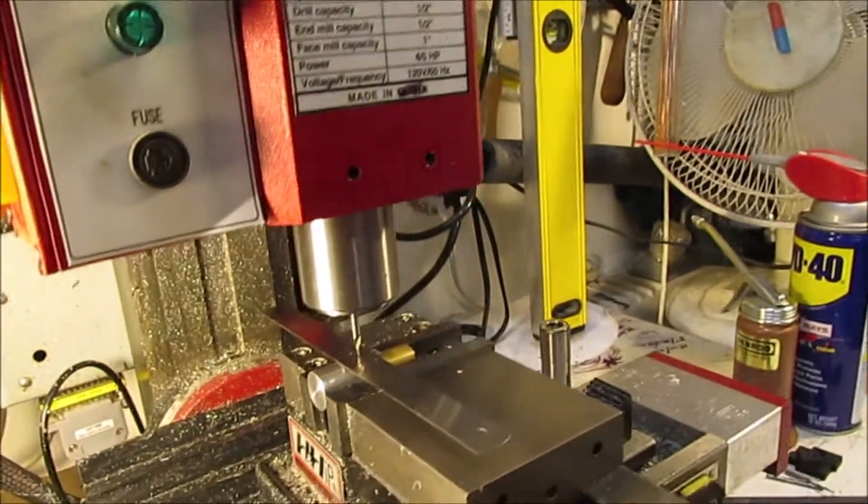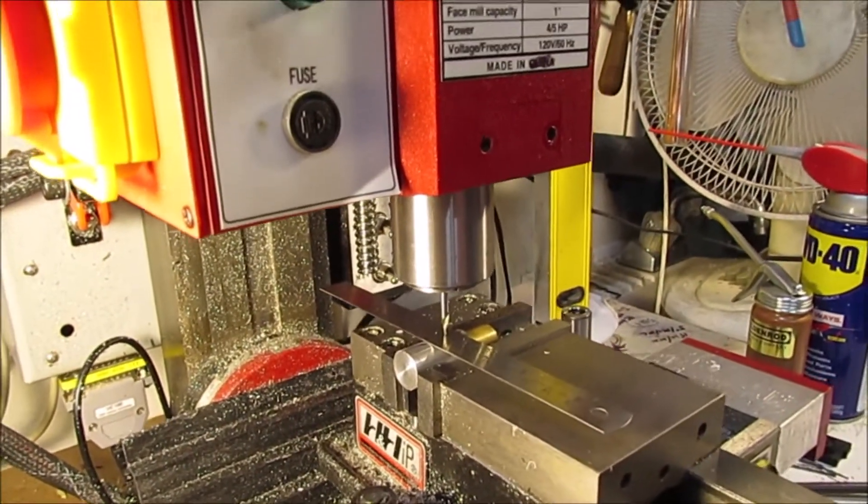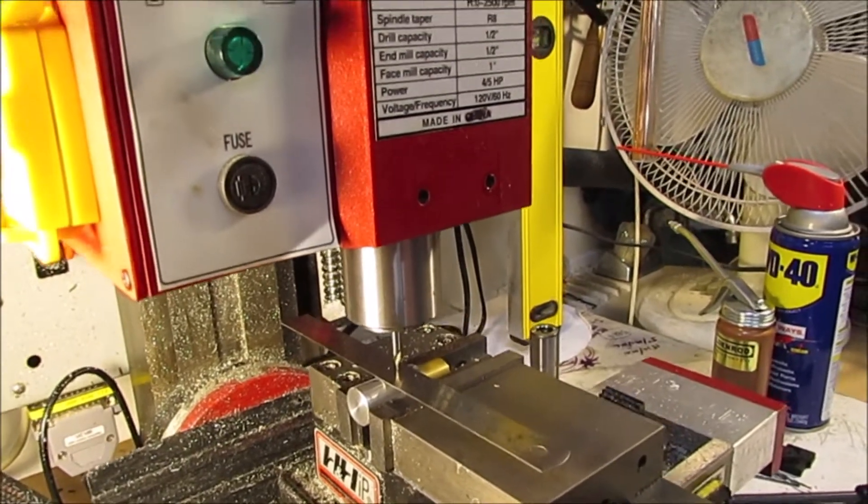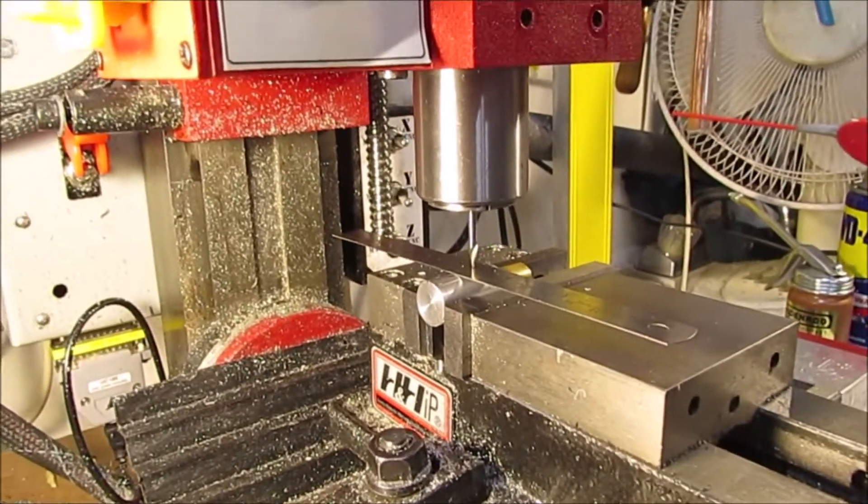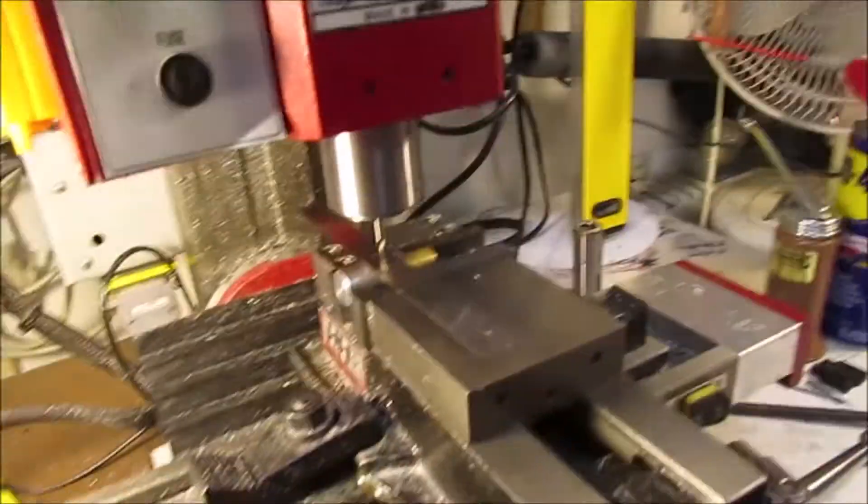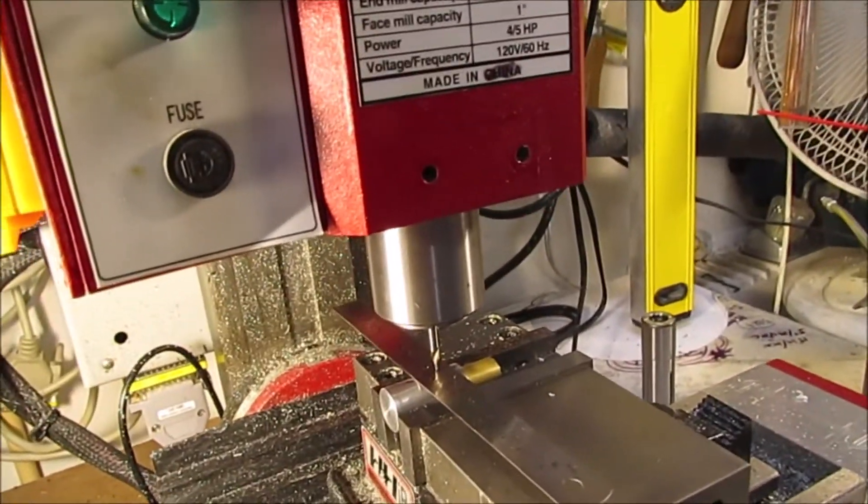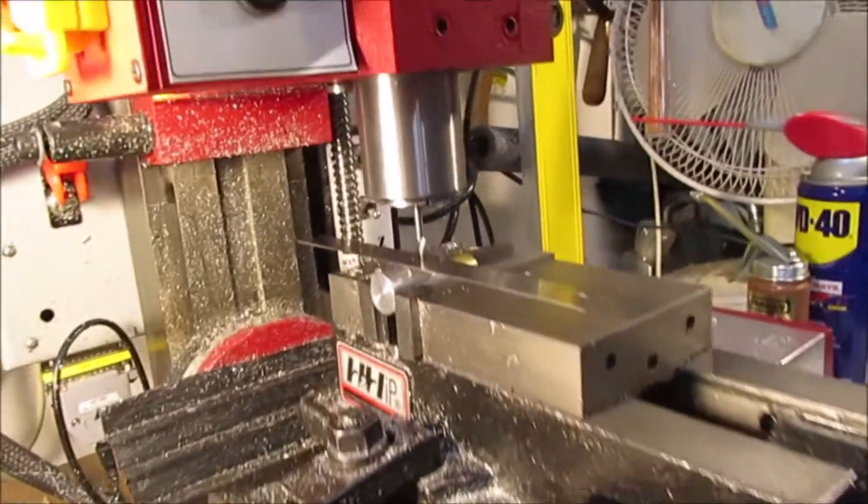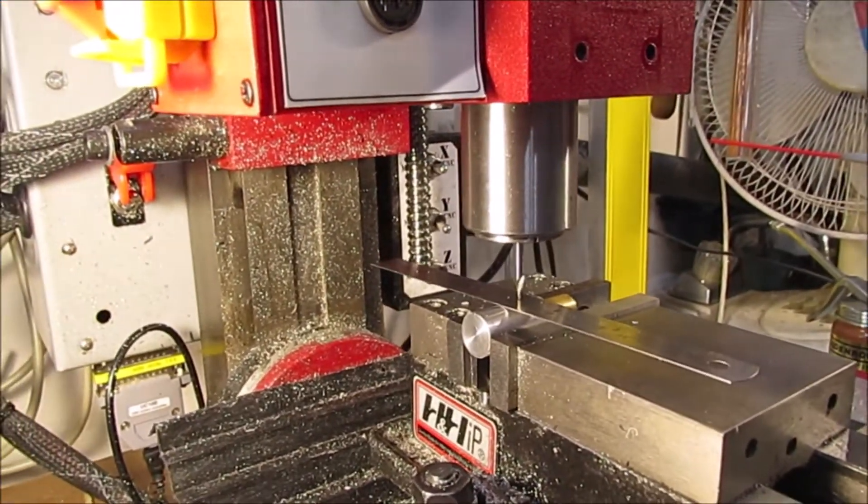And I'm either going to make my own flat or I'm going to put a dimple where my set screw will sit in to lock it in when I'm doing alignment. So what I'm going to do here now, though, you see how this works?